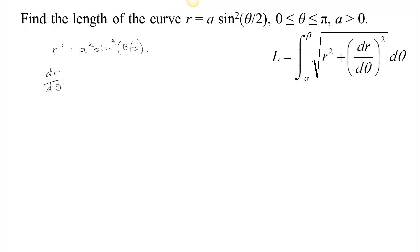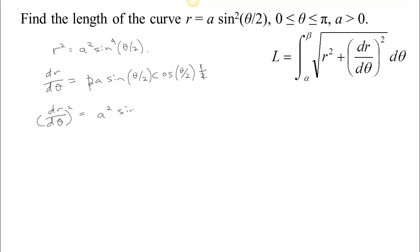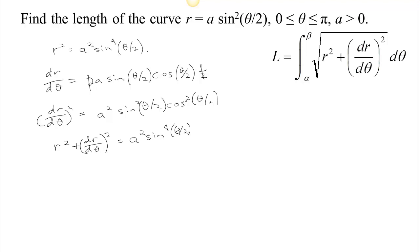First, r² is going to be a² sin⁴(θ/2). We can also calculate dr/dθ. If you take the derivative, the a is constant, the 2 from the sine squared comes down. You get sin(θ/2) times the derivative of what's inside — the derivative of sine is cosine — so we get cos(θ/2) times the derivative of θ/2, which is just one half. This one half cancels the 2. So (dr/dθ)² gives a² sin²(θ/2) cos²(θ/2).